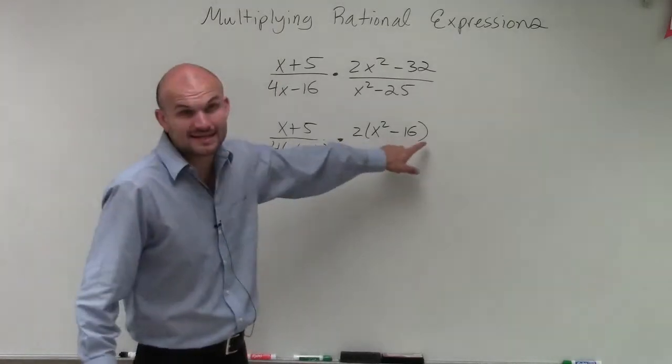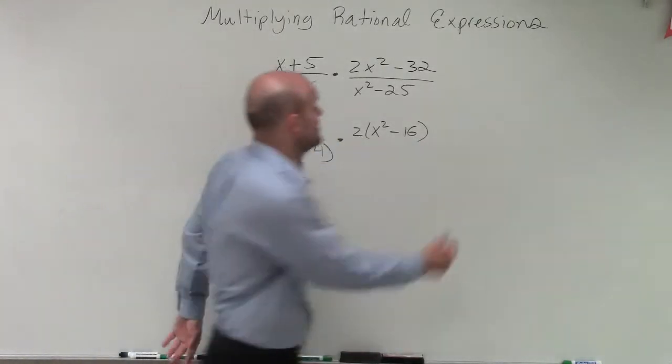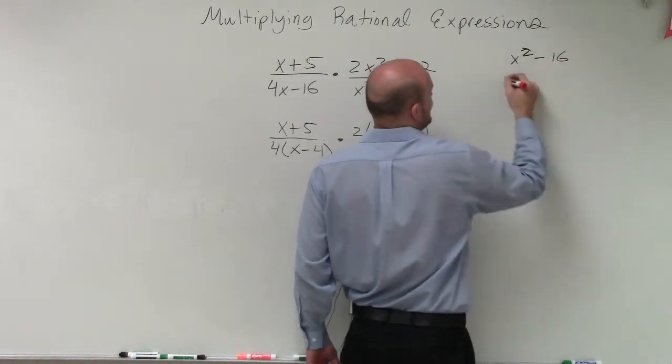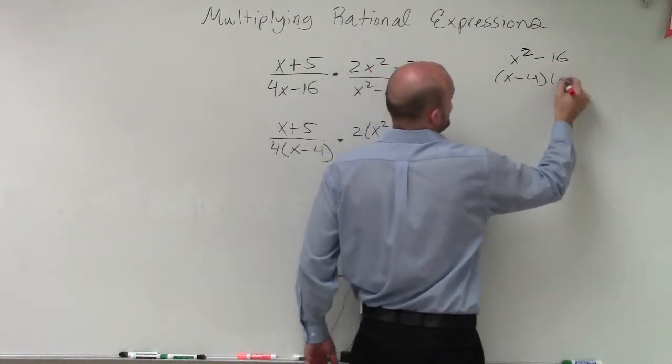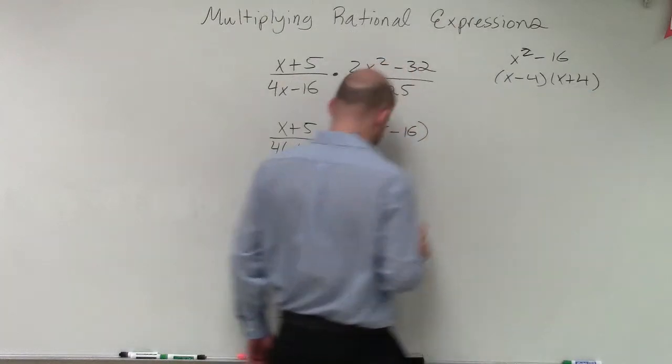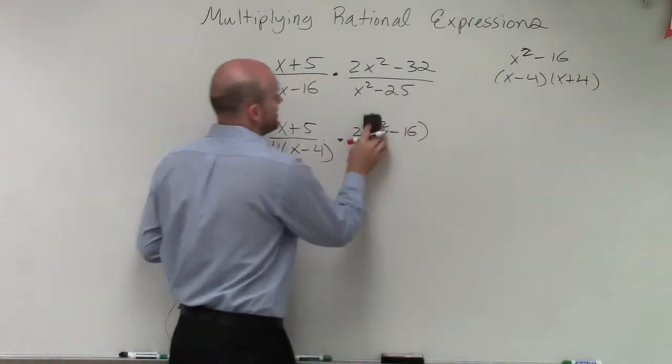Then we notice that x squared minus 16, that can be factored out as well, right? x squared minus 16 can be written as x minus 4 times x plus 4. So I'm going to erase this and actually write it in that factored form.